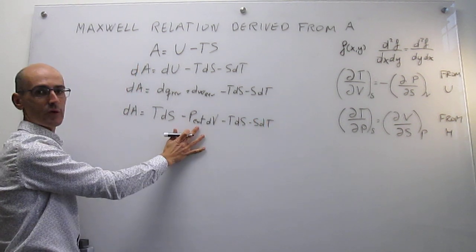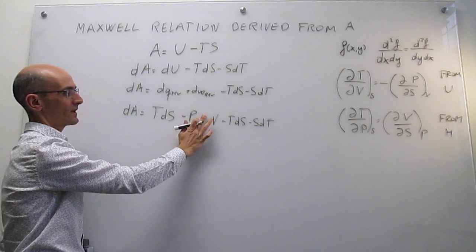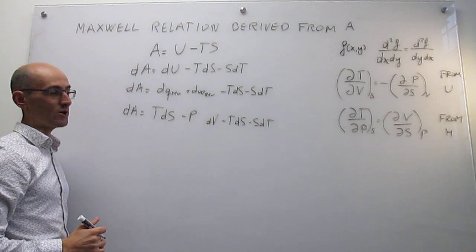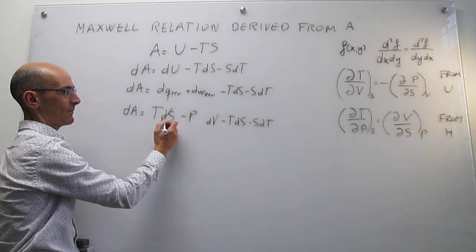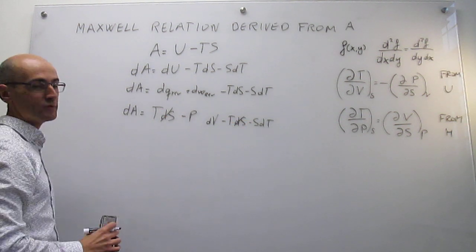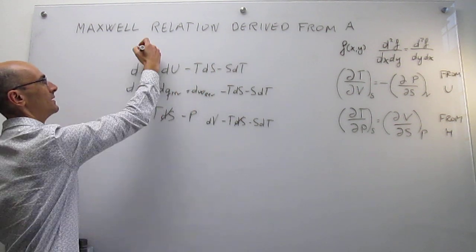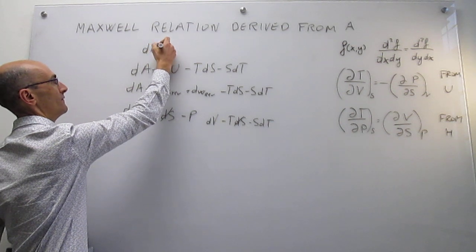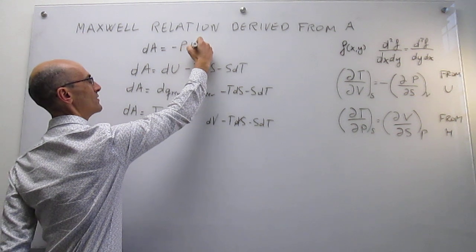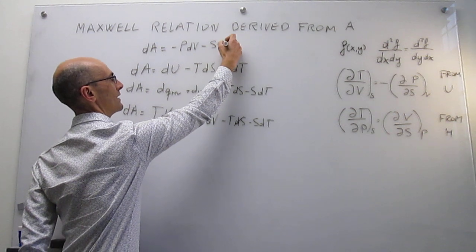As we have done in other Maxwell relation derivations, the external pressure equals the internal pressure in a reversible process because we have mechanical equilibrium. This sets up a nice cancellation, and we arrive at the fundamental equation for the Helmholtz energy: dA equals minus P dV minus S dT.